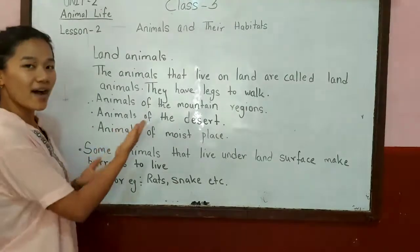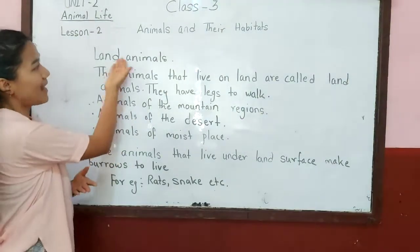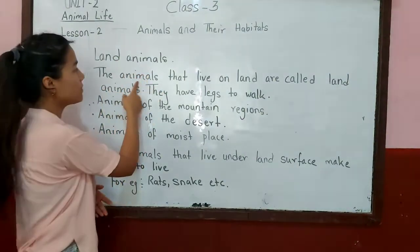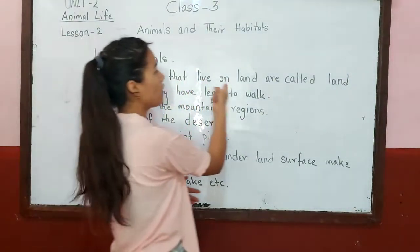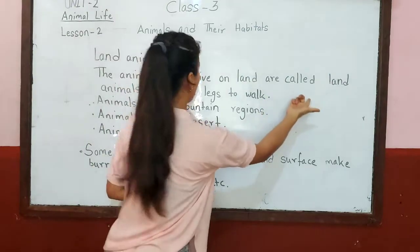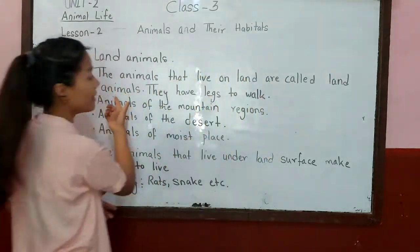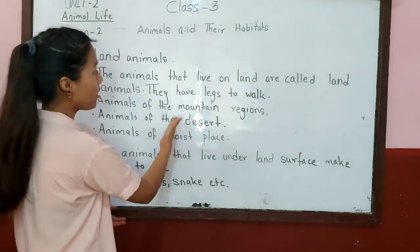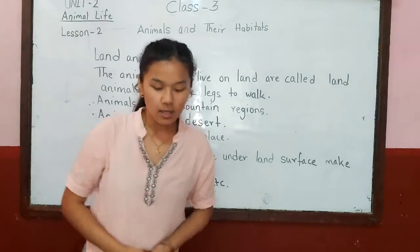We have already learned about water animals. Now let's look at land animals. The animals that live on land are called land animals. They have legs to walk.